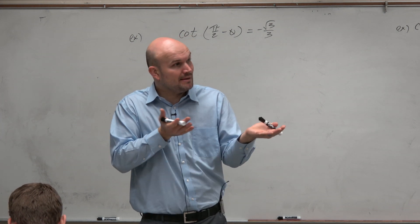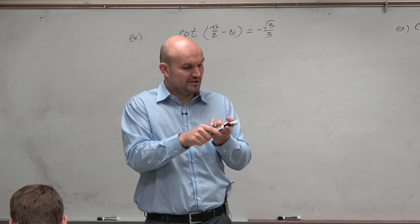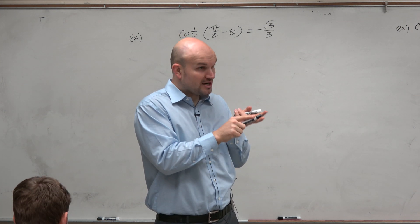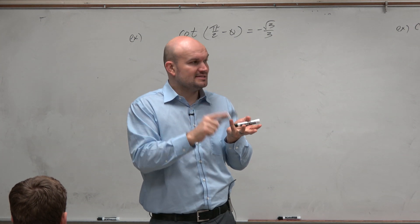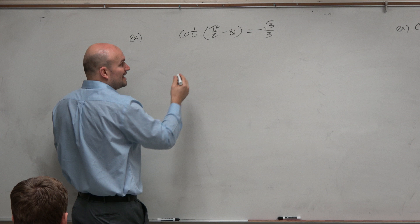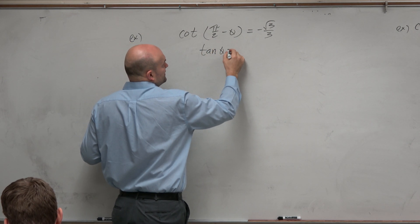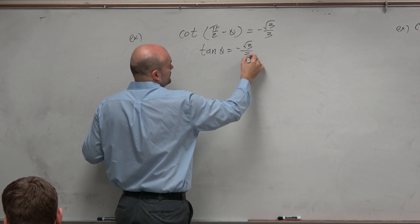Sine and cosine, those are co-functions of each other. Cosecant and secant are co-functions of each other. And tangent and cotangent. So this can be rewritten as tangent of theta equals negative square root of 3 over 3.